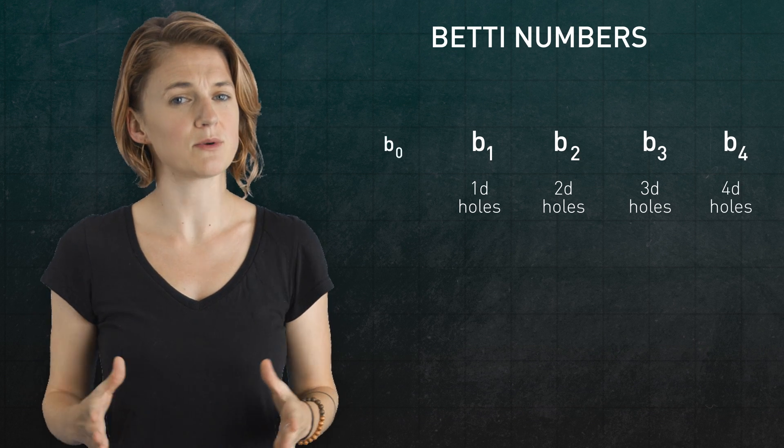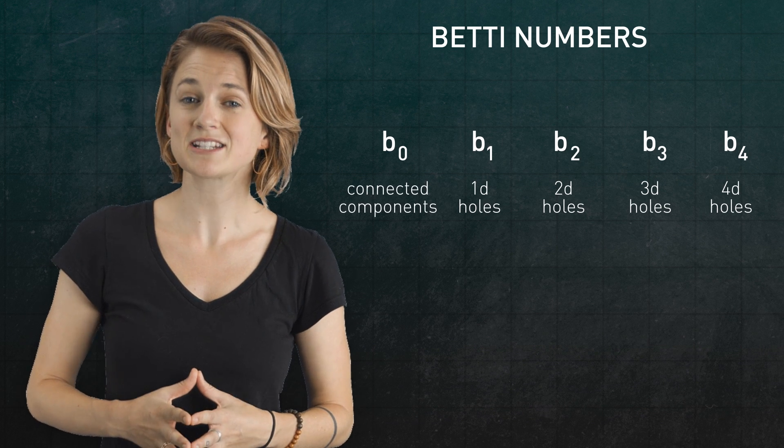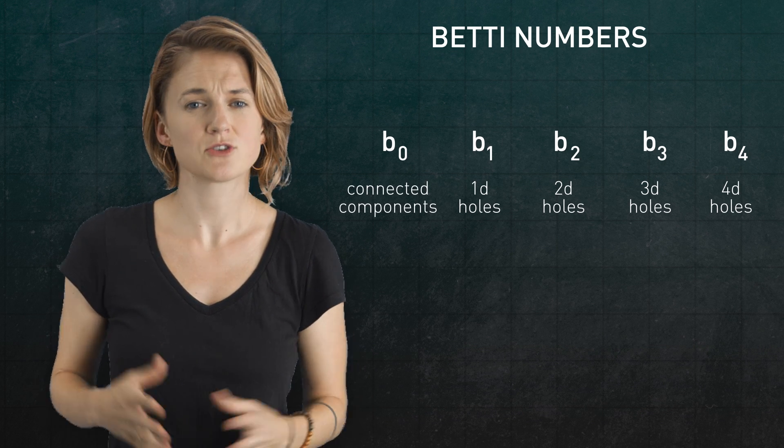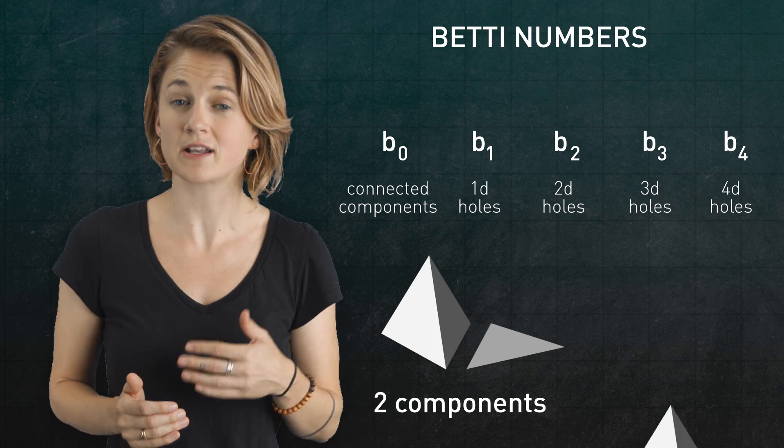There's also a zeroth Betty number, which counts the number of connected components a shape has. So, two in this case and one in this case.